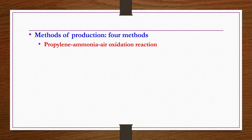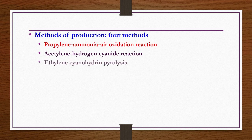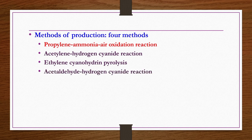There are 4 methods of production of acrylonitrile: first is the Propylene-Ammonia-Air Oxidation Reaction; second is the Acetylene-Hydrogen Cyanide Reaction; third is Ethylene Cyanohydrin Pyrolysis; fourth is the Acetaldehyde-Hydrogen Cyanide Reaction. We will be taking the first process, the Propylene-Ammonia-Air Oxidation Reaction. This is one of the rarest commercial reactions where three gaseous reactants react in the presence of a catalyst to produce one liquid product.